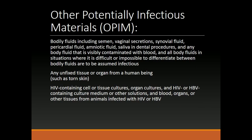Other Potentially Infectious Materials (OPIM) include bodily fluids including semen, vaginal secretions, synovial fluid, pericardial fluid, amniotic fluid, saliva in dental procedures, and any body fluid visibly contaminated with blood. All body fluids in situations where it is difficult or impossible to differentiate between them are to be assumed infectious. Also included: any unfixed tissue or organ from a human being, such as torn skin; HIV-containing cell or tissue cultures, organ cultures, HIV or HBV-containing culture medium or other solutions; and blood, organs, or other tissues from animals infected with HIV or HBV.